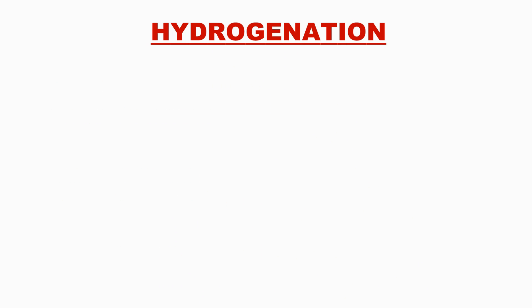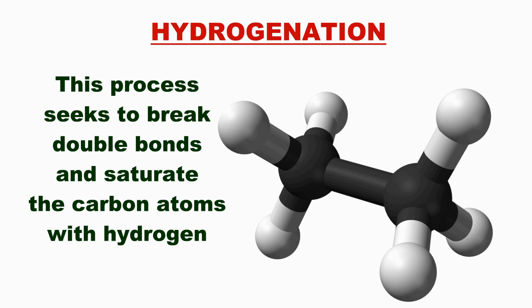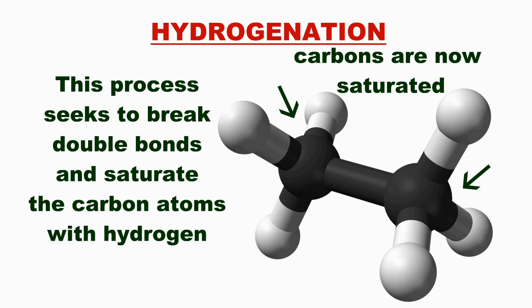Now if you take an unsaturated oil and you want to make a saturated fat from it, there's actually an artificial way to do it, which is called hydrogenation. This is the act of heating up the oil and bubbling hydrogen gas through it, which will straighten the fatty acid chain out and basically saturate the whole carbon chain with hydrogen atoms.